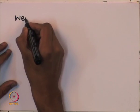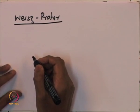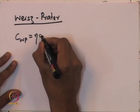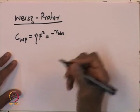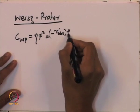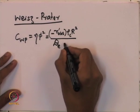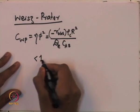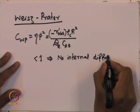The Weiss's Prater criterion uses a parameter called CWP, which is equal to the internal effectiveness factor multiplied by the Thiele modulus squared (phi squared). That equals the observed reaction rate multiplied by the density of the catalyst multiplied by the square of the length scale of the pellet, divided by the diffusivity into the concentration of the species at the surface of the catalyst. If this is less than 1, it suggests that there is no internal diffusional limitation.